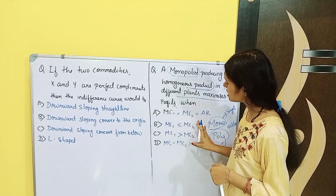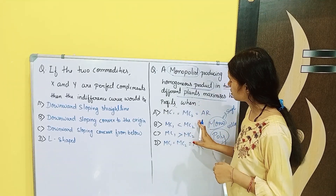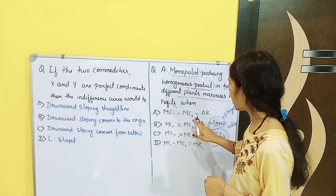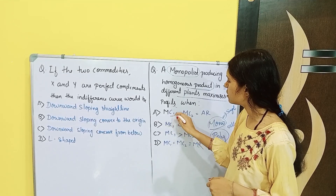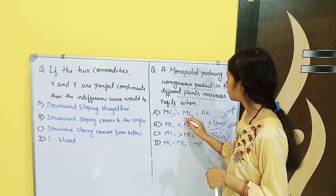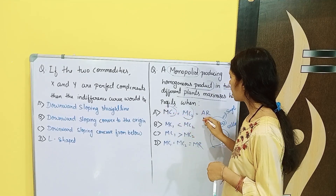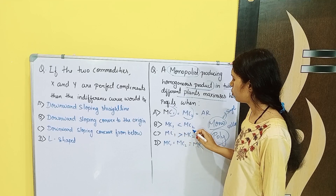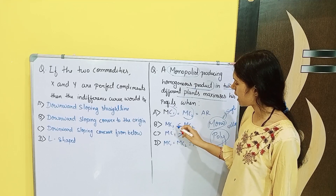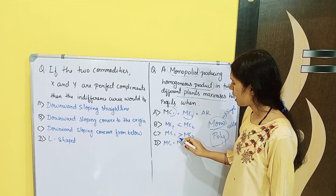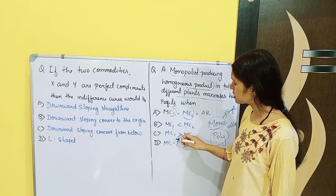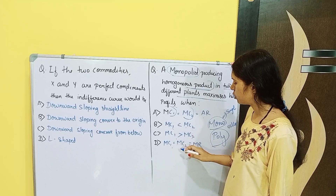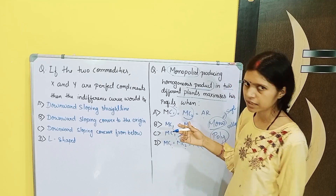There are four situations given. MC — Marginal Cost — MC1 and MC2 is equal to Average Revenue. MC1 and MC2 is greater than MC1. MC1 is greater than MC2. MC1 is equal to MC2 is equal to MR.